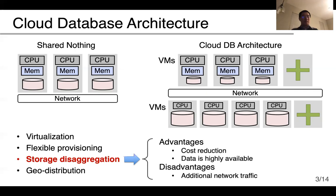Compared to shared-nothing, the disaggregation architecture can substantially reduce cost. A shared-nothing architecture needs to deploy virtual machines all the time, while a disaggregation architecture deploys virtual machines only when there are queries. Otherwise, only the storage service is paid, which is much cheaper. Another advantage is that cloud storage provides higher availability by default, improving reliability. However, one challenge is the frequent data movement over the network between the computation and storage layers. The limited network bandwidth can severely limit performance, causing a disaggregated database to underperform a shared-nothing database.